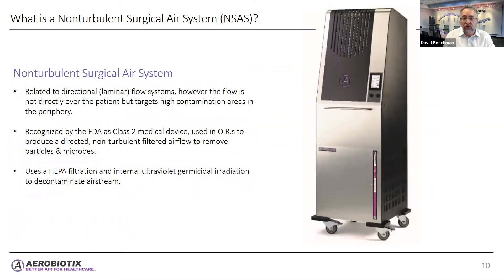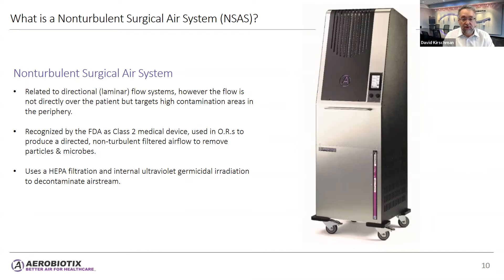So what is a non-turbulent surgical air system? These systems are related to directional flow systems — also known as laminar — however, the flow is not directly over the patient like traditional laminar systems. Instead, they target high-contamination areas in the periphery of the room where we have found the highest levels of contamination and where bacteria and bioaerosols tend to congregate. These systems are recognized by the FDA as a Class II medical device labeled for use in operating rooms to produce a directed non-turbulent filtered airflow to remove particles and microbes.